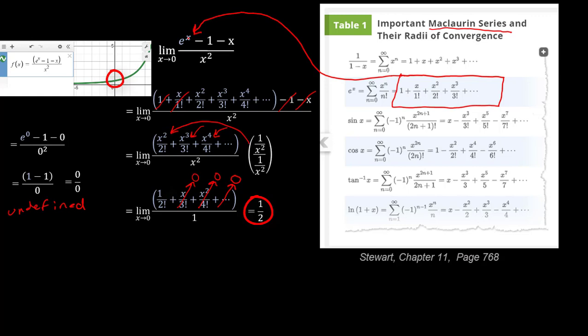So this is how a Taylor, or in this case a Maclaurin series, can help us evaluate an otherwise intractable limit. Granted, replacing an expression with a series oftentimes doesn't seem like it's going to help, but if things start canceling out, such as in this case, we can see that it does actually help.